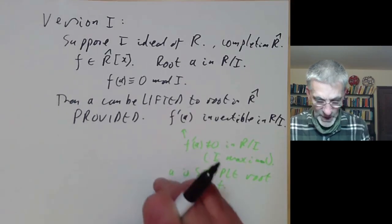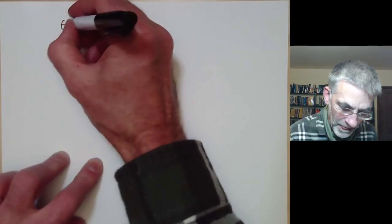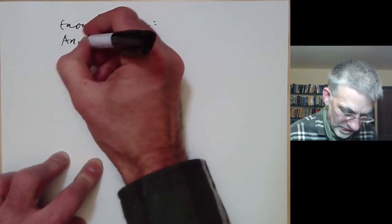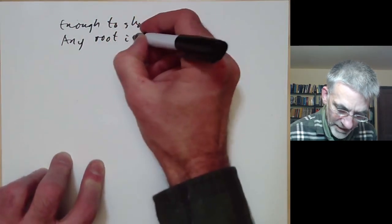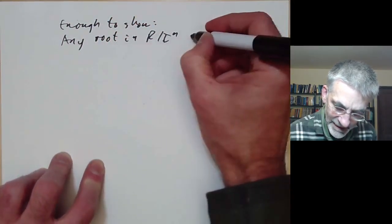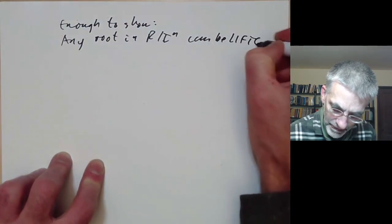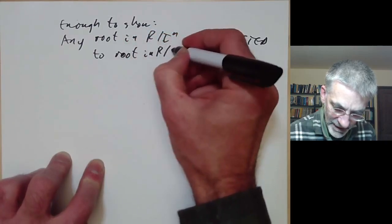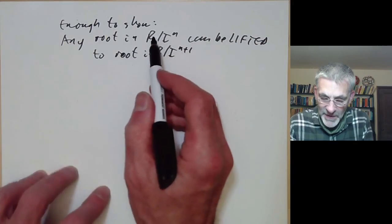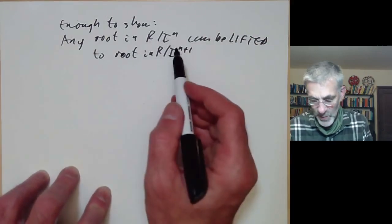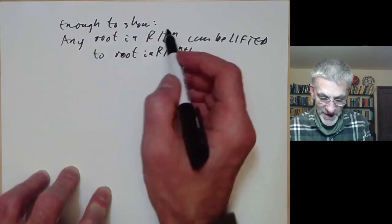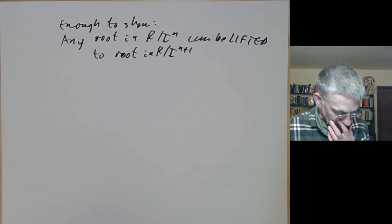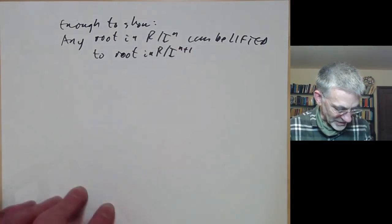This is quite easy to prove. It's enough to show that any root in r over i to the n can be lifted to a root in r over i to the n plus 1. Because then we can start with our root in r over i, and then get roots in r over i squared, r over i cubed, and so on. We join these all together and get a root in the completion — doing it one step at a time.